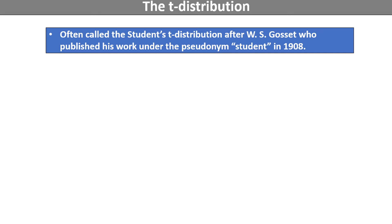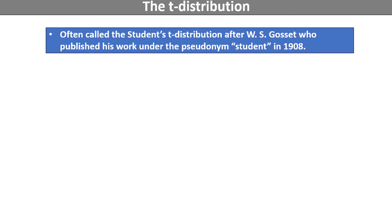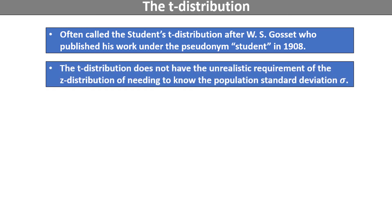The t-distribution was created to overcome a problem related to the z-distribution. In order to use the z-distribution for confidence intervals and hypothesis testing, the population standard deviation must be known. But this is a very unrealistic assumption, as the population standard deviation is rarely if ever known exactly. It can be estimated with a sample, but its exact value will almost always be a mystery. The t-distribution allows us to proceed without knowing the population standard deviation.